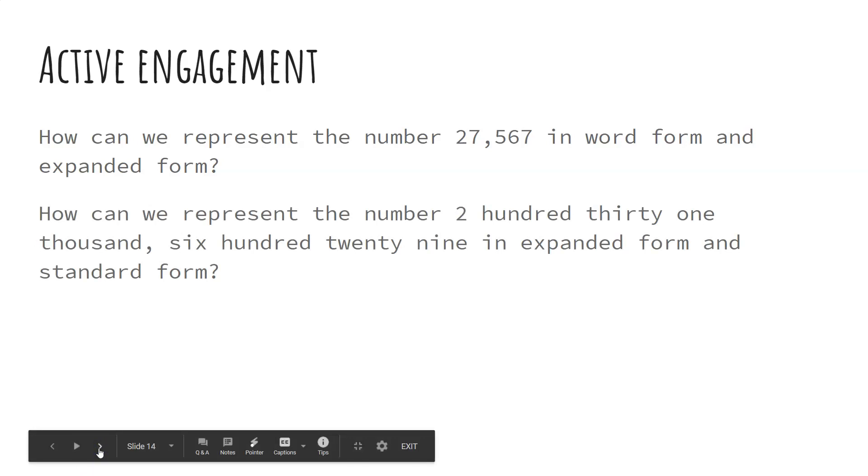Okay, so now we're going to try another one. Now we have how can we write the number 231,629 in expanded form and standard form. And for some reason that two is really causing me trouble. I put another number in there. I should switch that to the word two for 231,000. So your teacher now can pause to give you a chance to practice and to model it for you.